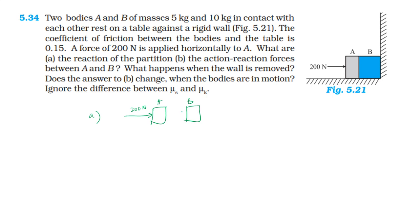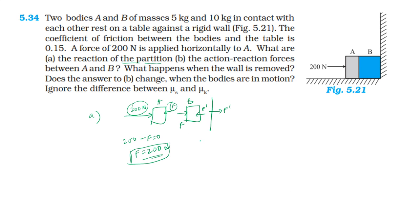Force is applied to A. A pushes B, and the action-reaction pair gives B pushing back on A with force F. B pushes on the wall with force F dash, and the wall reacts with equal and opposite force on B. Since the total force on B is zero: 200 minus friction minus F equals zero. The reaction of the partition equals 200 N, so F dash equals F equals 200 N.